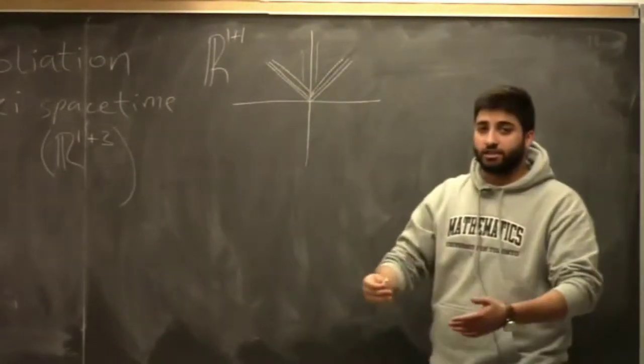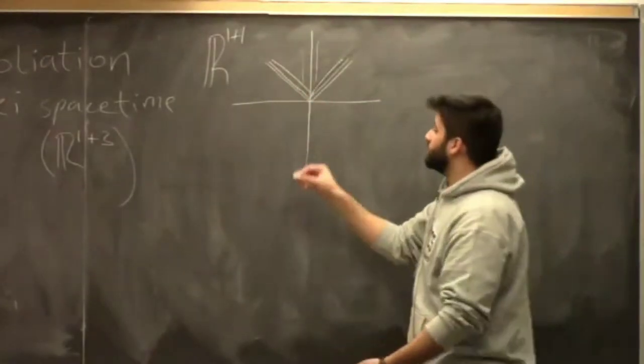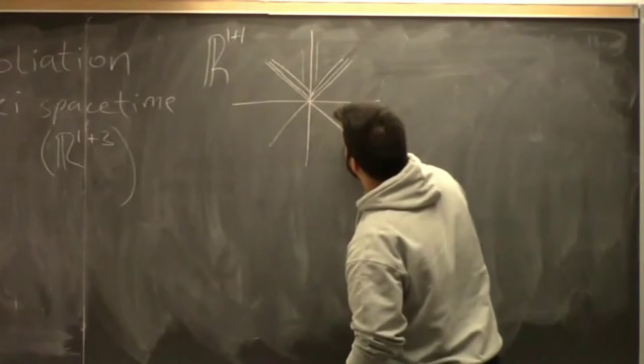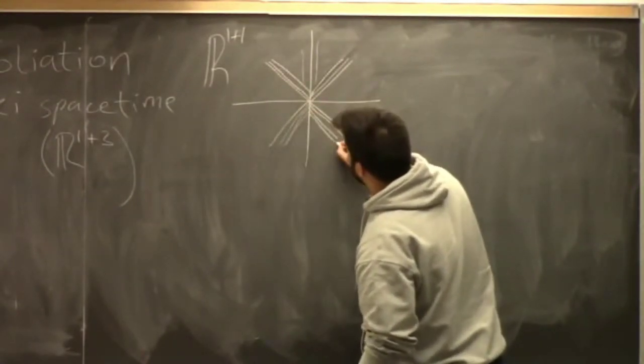Then there's another foliation, which is why it's called double null foliation, which is of the past directed cones. So you go down, and you consider the family of cones that go down, down, down, down.